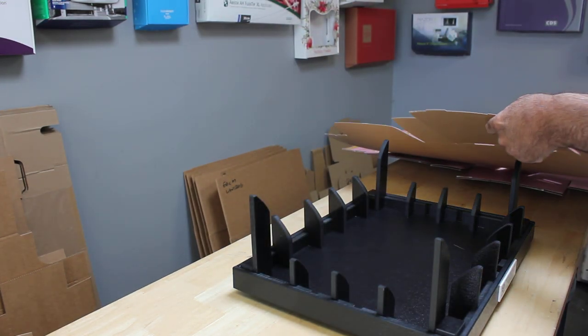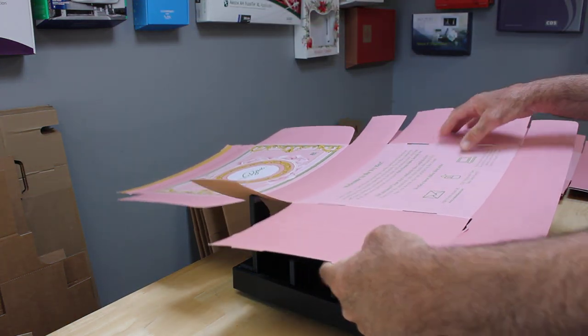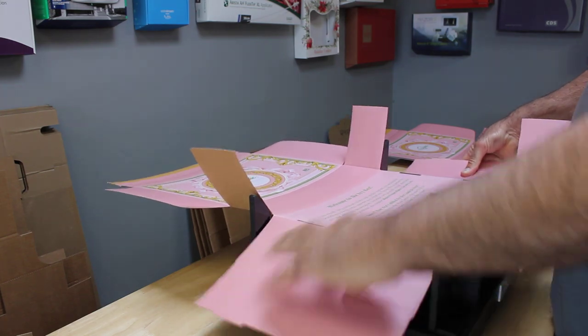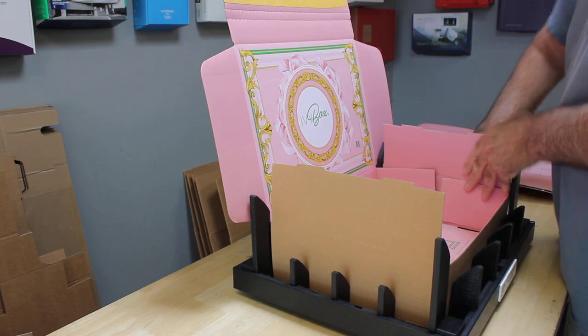We're going to grab our box and go through a two-part process. We're going to set the box into the fixture, then press it down and make our fold. So we set it into the fixture. Let's press it down. Make your folds.